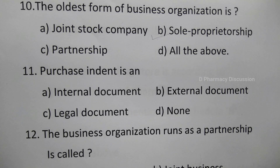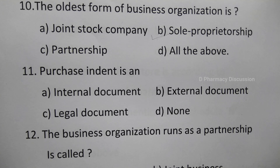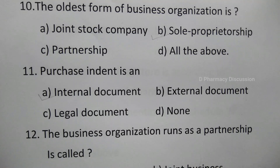Question 11: Purchase intent is — option A: internal document, B: external document, C: legal document, D: none. The correct answer is option A, internal document.